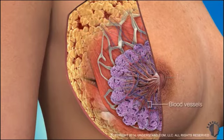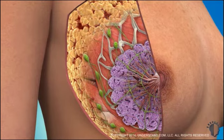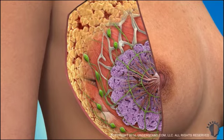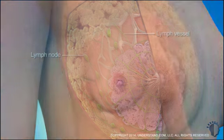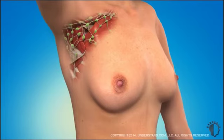A network of blood vessels supplies blood to the breast, providing cells with oxygen and nutrients. Lymph, a fluid that surrounds the cells and helps eliminate cellular waste and fight infection, also circulates through the breasts. Lymph is transported from the breasts through a series of lymph vessels that lead to tiny filtering organs known as lymph nodes.